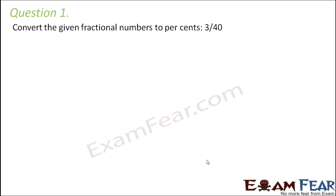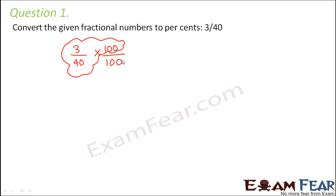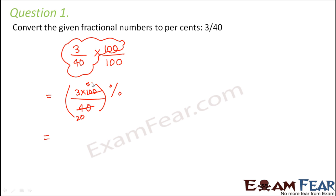Question number 1: Convert the given fractional number into percent — 3 by 40. So how do you convert it into percentage? You multiply the numerator and the denominator by 100. Everything except the denominator 100 is considered as one number, so you write it as 3 into 100 divided by 40, and the denominator 100 gets represented by the percentage symbol. So this becomes 15 by 2 percent, and 15 by 2 in decimal is 7.5 percent.